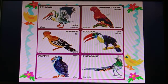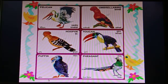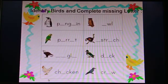Pelican, Umbribat, Hoopo, Token, Puffin, and Pheasant. These all are famous birds.